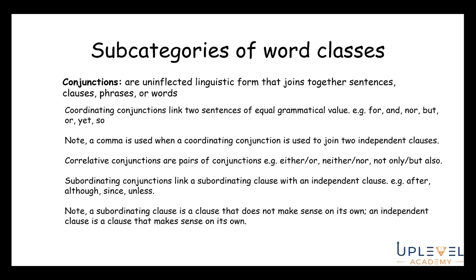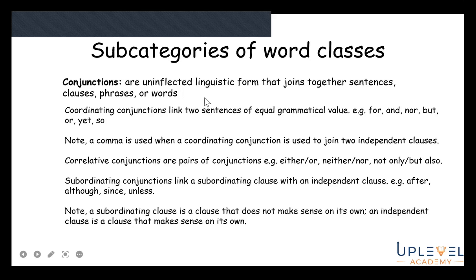Correlative conjunctions are pairs of conjunctions — for example either/or, neither/nor, not only/but also — where both parts are needed to join a sentence. Subordinating conjunctions join an independent clause with a subordinate clause: a clause that makes sense on its own, and one that doesn't. Examples include after, since, unless. A subordinating clause does not make sense on its own; an independent clause does. Make note of these and review the recording a few times — use flashcards or a mind map to memorize them.